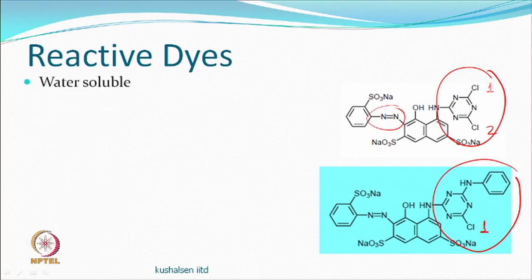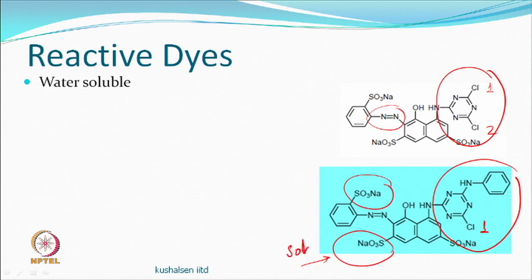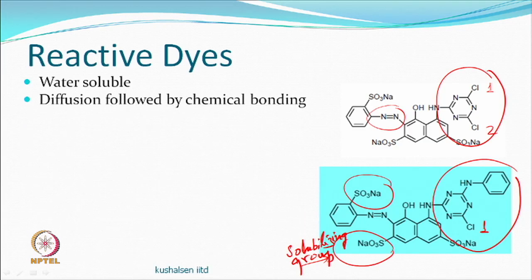All reactive dyes are water soluble because of solubilizing groups like sulfonate groups, so we make paste in aqueous medium. Initially, whether in dyeing or printing, we want diffusion to take place inside the fiber first, and then chemical bonding — which we believe is covalent bonding.